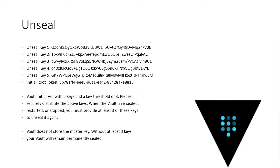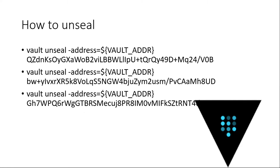When you unseal Vault, it gives you five keys. You pick the keys you want to use, initialize it, and say: unseal with key number two, key number five, key number four. You would need somebody to store this information securely — ideally three people each holding one key — or you could use an HSM to automatically unseal every time it starts. Using the Vault command, you just say unseal and pass in each key, and it will actually unseal.